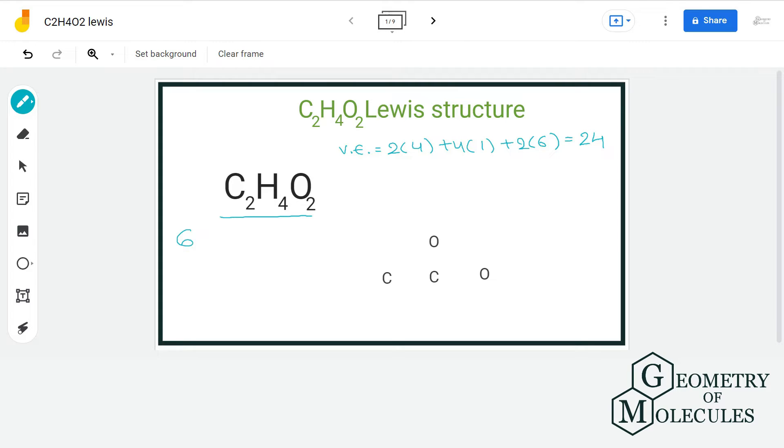For the first Lewis structure, we will arrange carbon and oxygen as shown here and attach 3 hydrogen atoms to the terminal carbon and 1 hydrogen atom to this terminal oxygen. We will place electron pair in between each atom for bond formation.